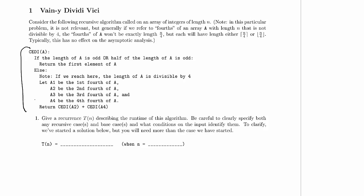Note, in this particular problem it is not relevant, but generally if we refer to fourths of an array A with length n that is not divisible by n, the fourths of A won't be exactly n over 4 in length, but each will have length either ceiling of n over 4 or floor of n over 4. Typically this has no effect on the asymptotic analysis.